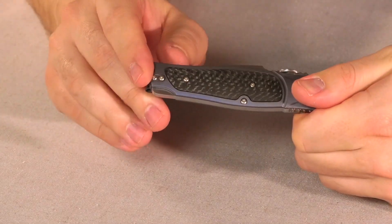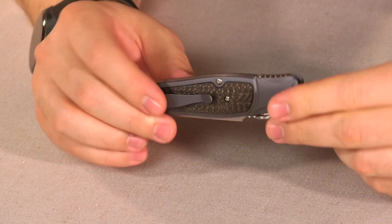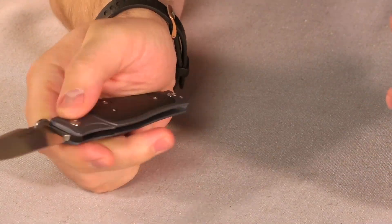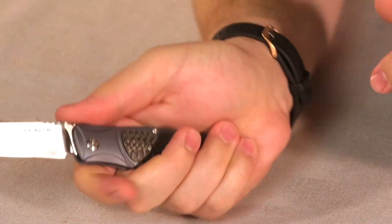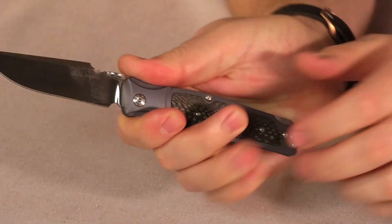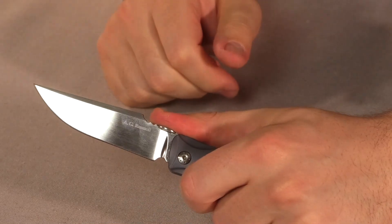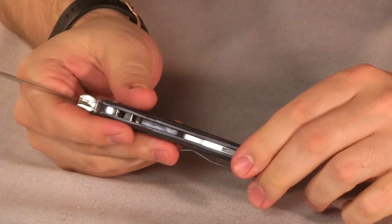So between the reversible clip, the thumb disc, and the lock back being a hand neutral lock, this is a fully right-handed or left-handed knife, which is awesome. I love knives that can do both because I can do both.